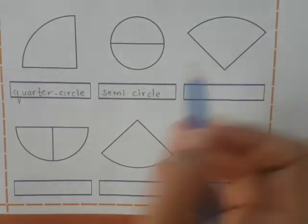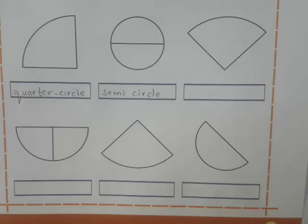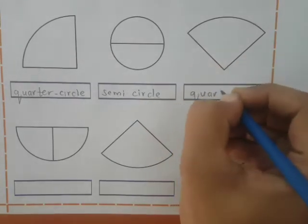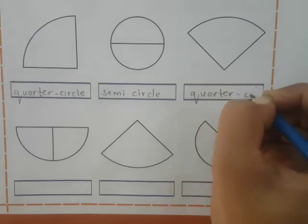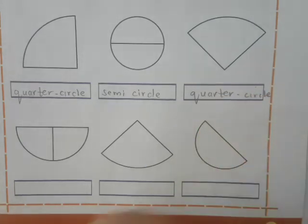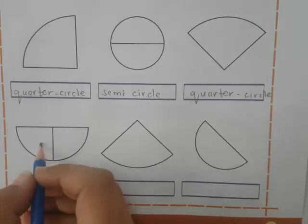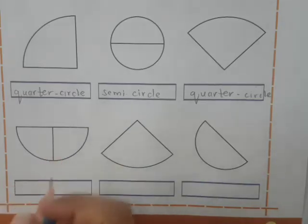What is the next one shape? You are right, it's quarter circle. Next one, yes, there are two parts and each part is quarter circle.